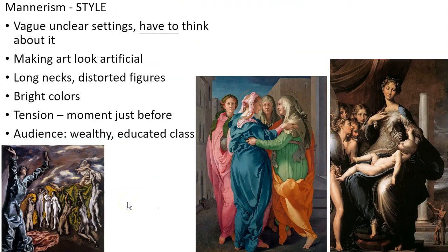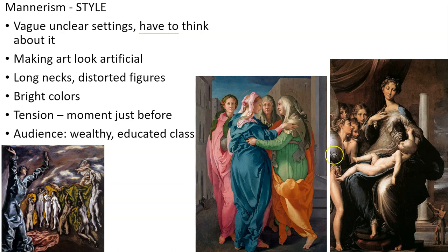When we talk about Mannerism's style: vague, unclear settings, and making things look artificial. If we look at this piece, we can see a setting but it's not really clear what's going on — we have curtains but also a column with nothing behind it. Is it inside? Is it outside? We have long necks and distorted figures; their heads seem very small and their bodies are obscured by draping. It's a focus on the moment just before — we can predict what's going to happen, but we don't have the actual moment. The audience would be the wealthy educated class, very familiar with biblical stories and their usual representations.